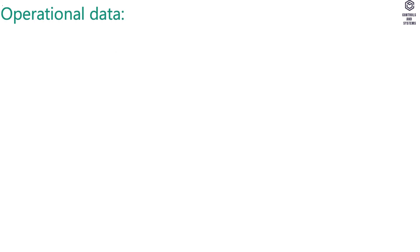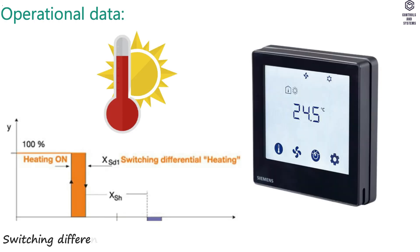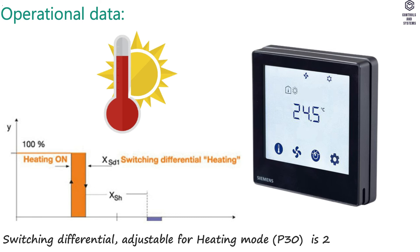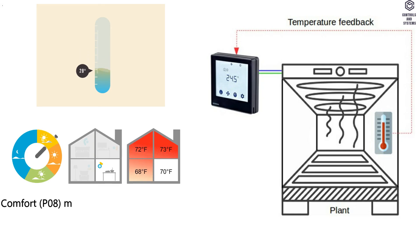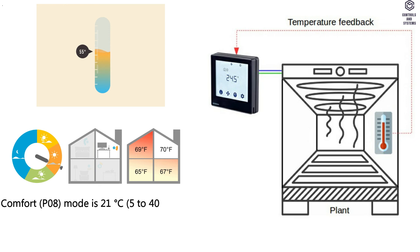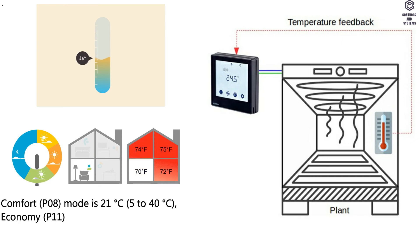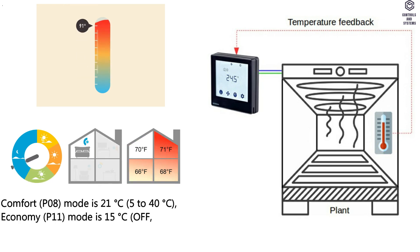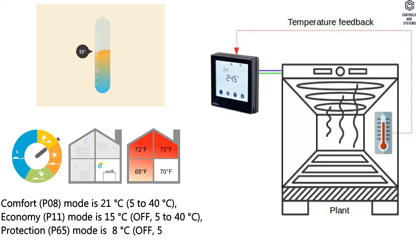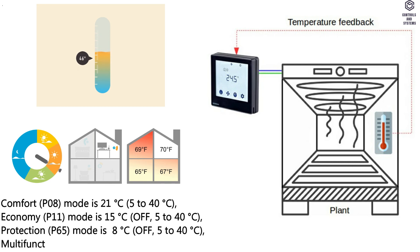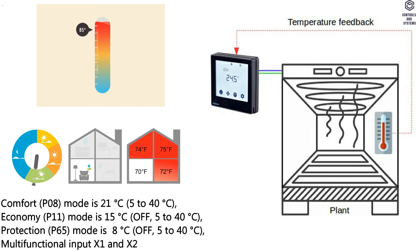Operational Data. Switching differential — adjustable for heating mode P30: 2K, range 0.5 to 6K. Set point setting and range: comfort mode default 21°C, range 5 to 40°C; economy mode default 15°C, range 5 to 40°C (or off); protection mode default 8°C, range 5 to 40°C (or off).